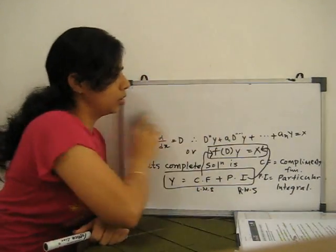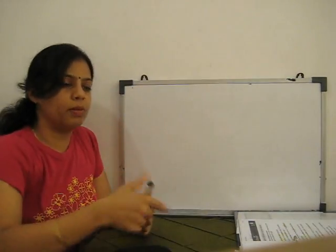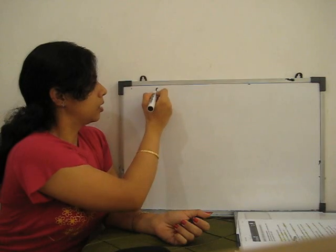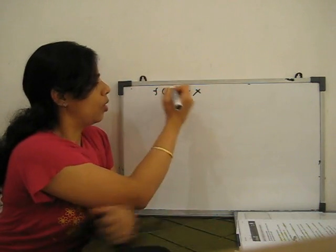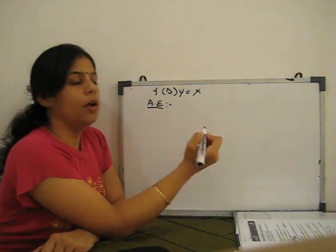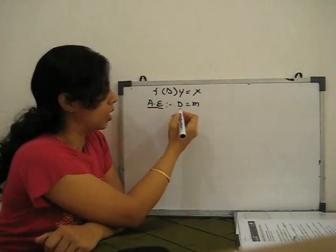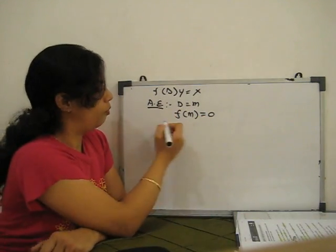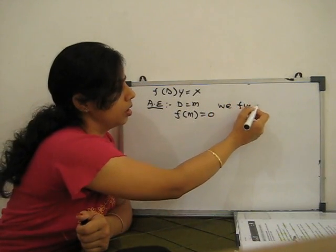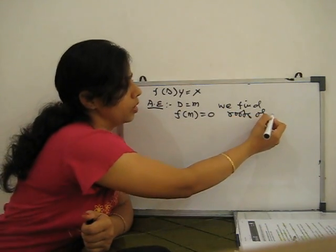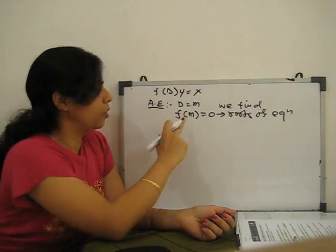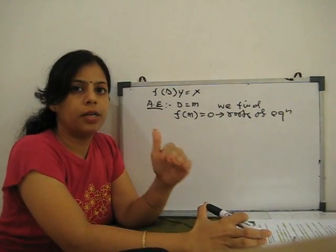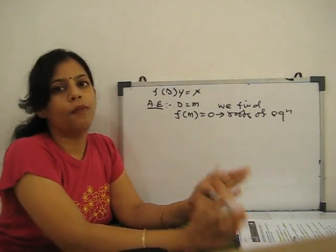To find the complementary function, the first step is to write the auxiliary equation. For the equation F(D)·y = X, we form the auxiliary equation by substituting D = m in the left-hand side, giving F(m) = 0. The form of the complementary function depends entirely on the type of roots of this auxiliary equation.